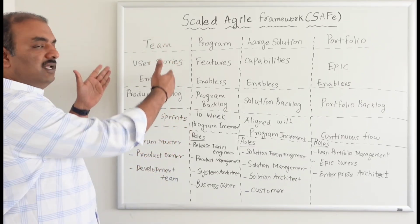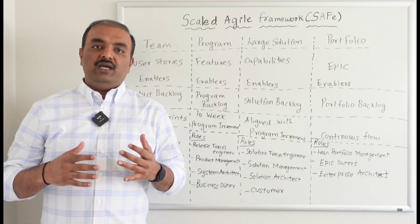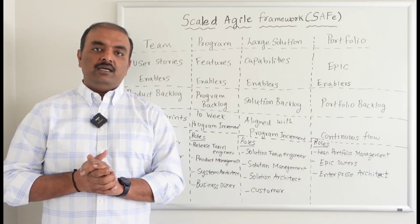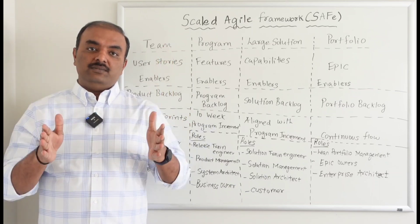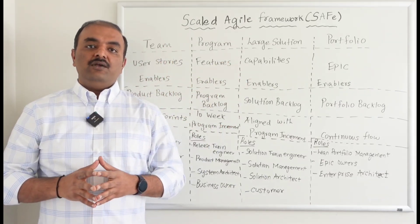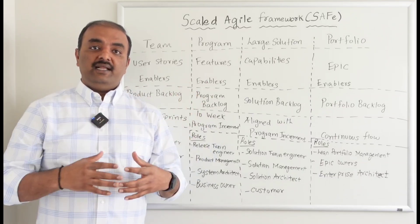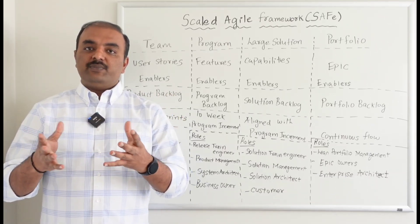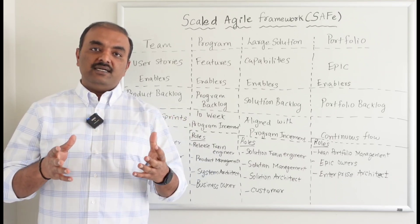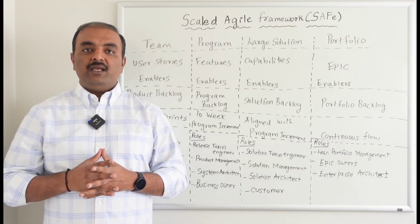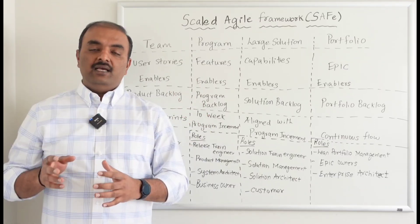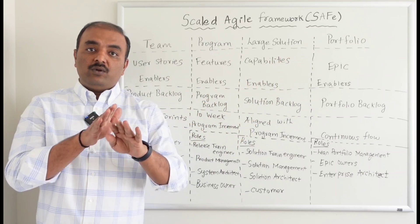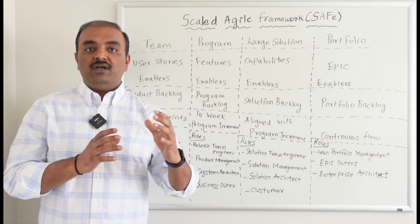Now this team framework is very successful — we have user stories, we have the required roles. Then why do we need Scaled Agile? A couple of problems: in a company it's not that there's going to be only one team — there could be multiple teams. If multiple teams are working in different cadences — say team one is on a two-week sprint and team two is on a three-week sprint — there will not be any uniformity, resulting in gaps. It also becomes very difficult to find dependencies when a feature in one team depends on another team working on a different cadence.